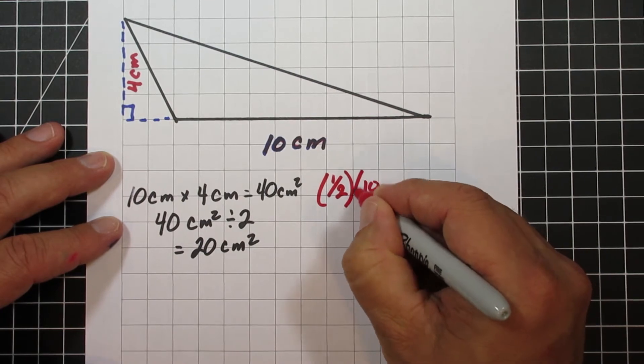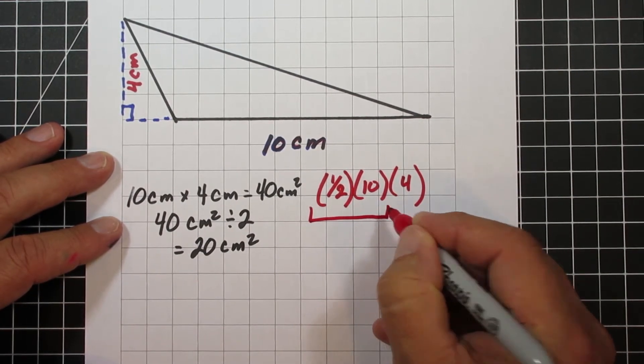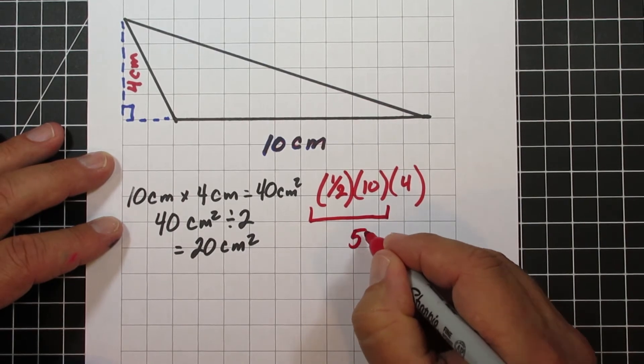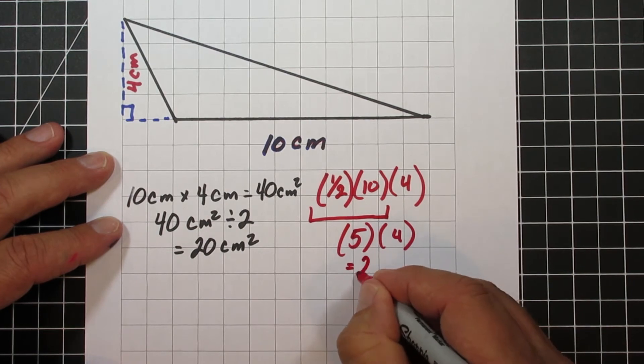Using the other formula, 1 half times 10 times 4, we'll multiply 1 half times 10 and get the 5, and then 5 times 4 will give us 20 centimeters squared, just like the first one we did.